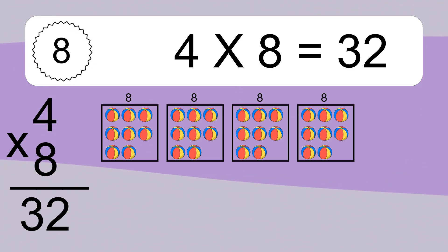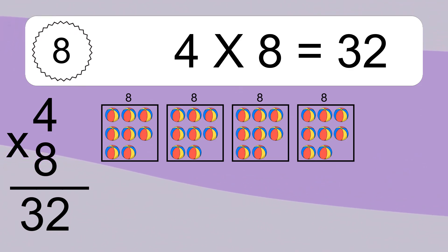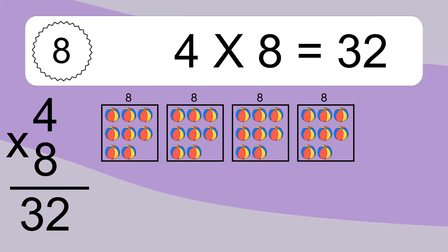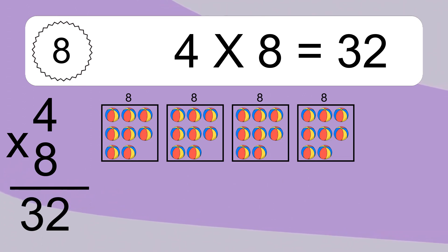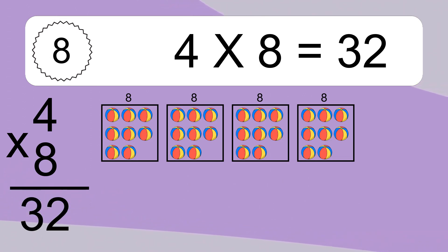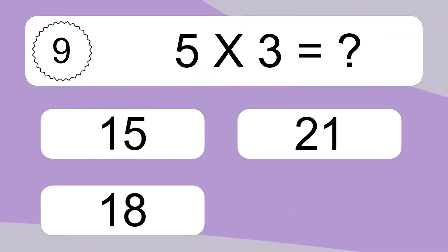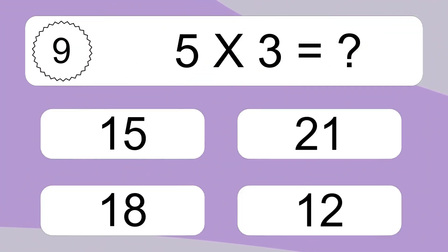We have 4 boxes, and each box has 8 colorful balls inside. If you count all the balls in all the boxes together, you will have 4 times 8 balls. This equals 32 balls.